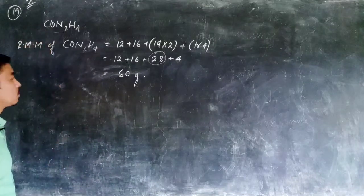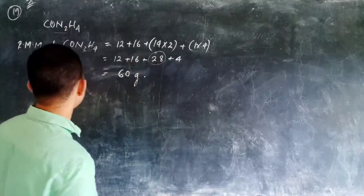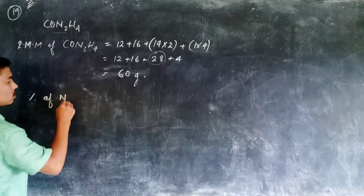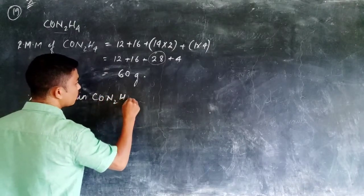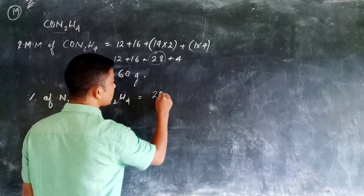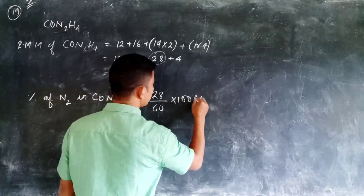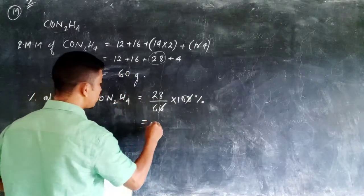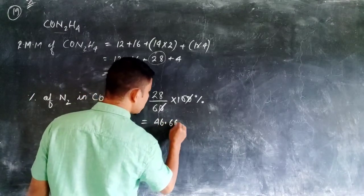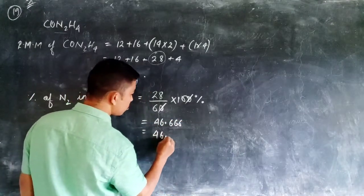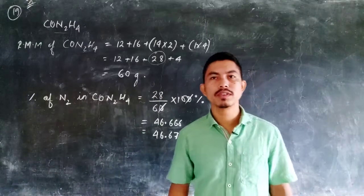Now we find the percentage of nitrogen. The individual mass of nitrogen in the compound is 28 grams. To find the percentage, we use: mass of nitrogen divided by the total molecular weight of the compound, multiplied by 100%. So that is 28 divided by 60 into 100, which simplifies to approximately 46.67%. This is how we solve a question on percentage composition — it is very simple arithmetic.